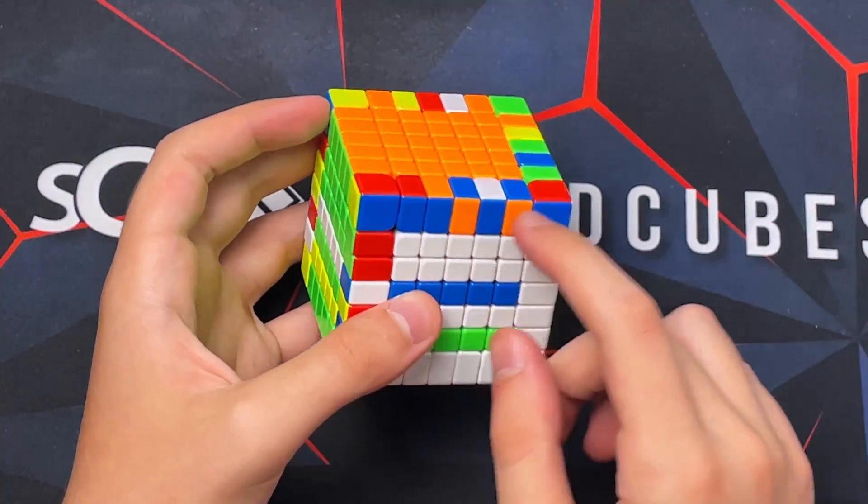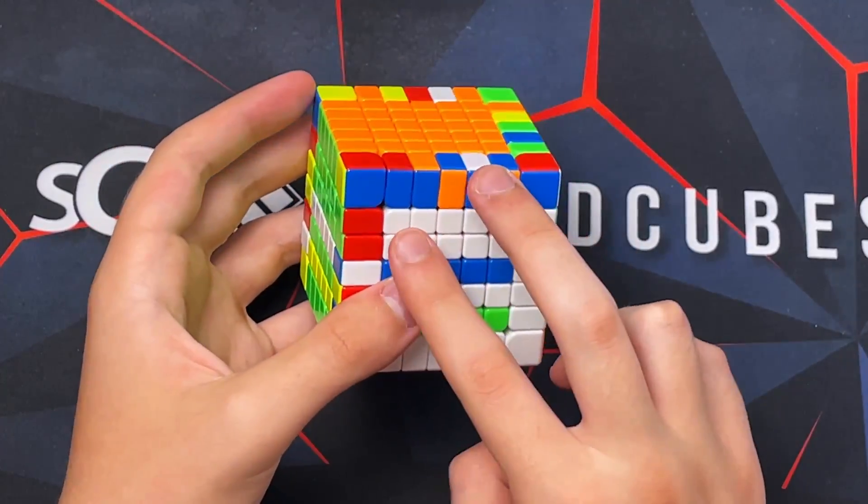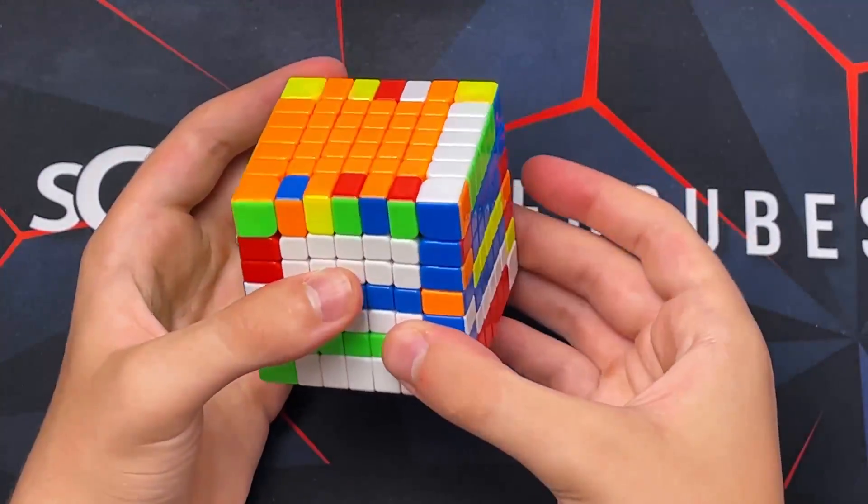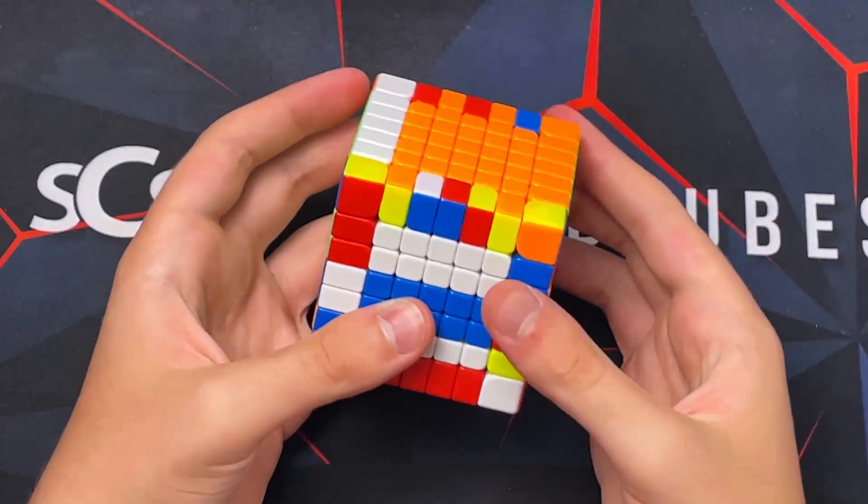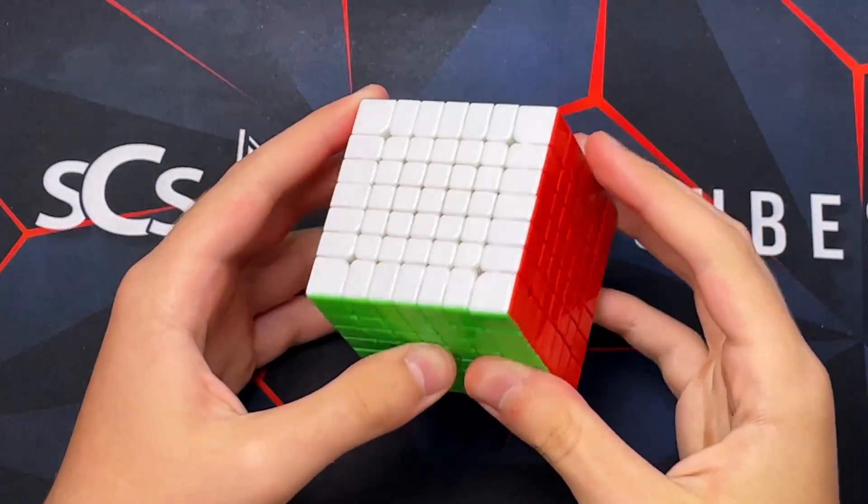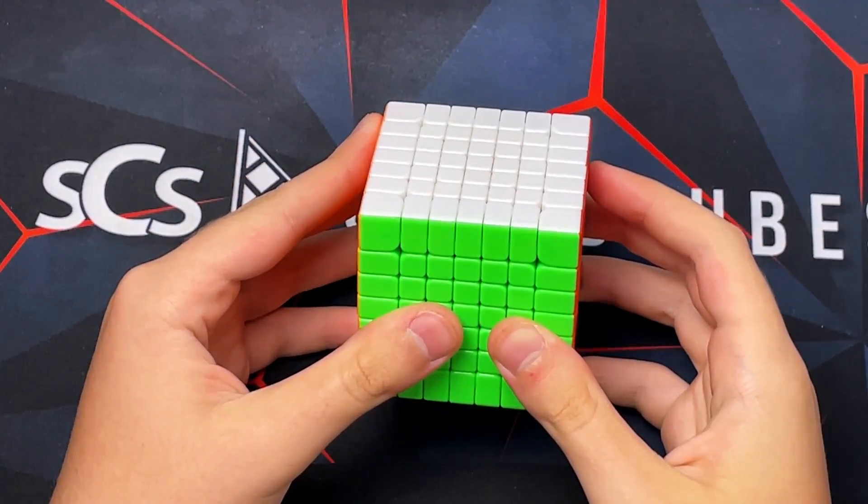Once you see this, you should just do this right away, pair it, it's all muscle memory. Then you should be looking ahead to other pieces in the cube. That's it. If this video helped you, please like and sub, and also bye.